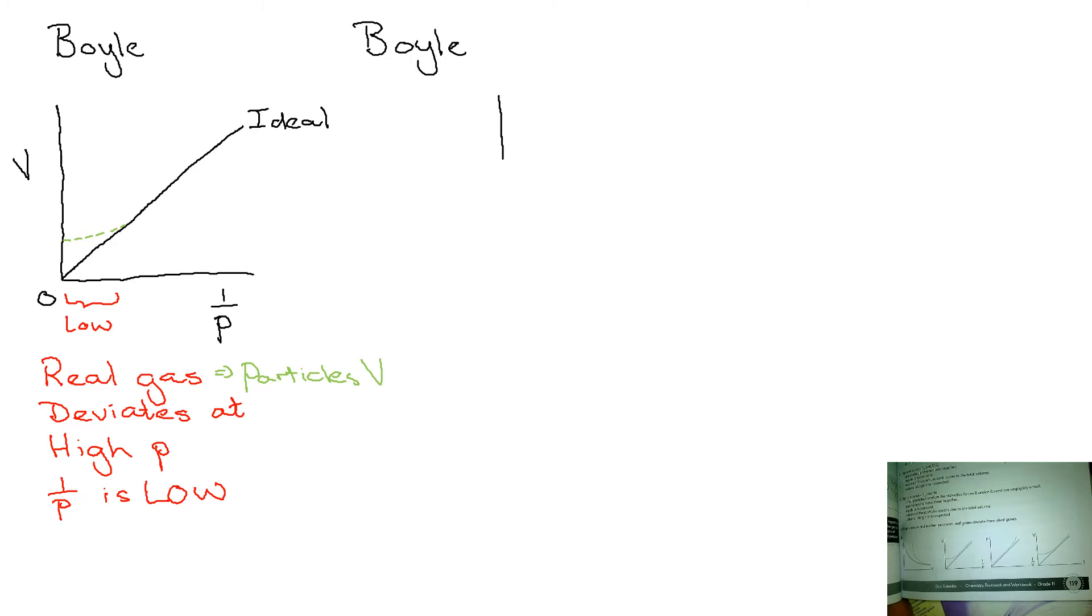The third graph there on page 119 is a graph of pressure on the y-axis to 1 over volume on the x-axis. So we know for an ideal gas, the relationship is a directly proportional relationship, pressure and 1 over volume. So for a real gas, because the real gas particles have volume, there is a deviation at high pressure. So these are the high pressure areas. And your volume will not decrease as expected.